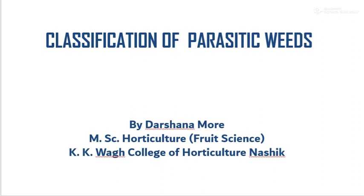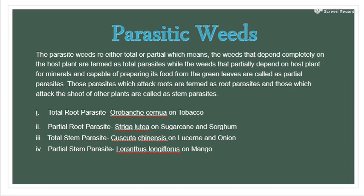Parasitic weeds are either total or partial. Weeds that depend completely on the host plant are termed as total parasites, while weeds that partially depend on the host plant for minerals but are capable of preparing their own food through green leaves are called partial parasites. There are two types: total parasitic weeds and partial parasitic weeds. Parasites which attack on roots are termed as root parasites, and those which attack on the shoot of other plants are called stem parasites.